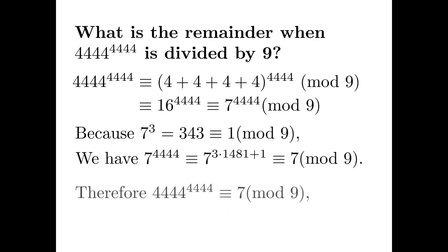As a result, 4,444 to the power of 4,444 has remainder 7, and A, B, and C all have remainder 7 when they are divided by 9.